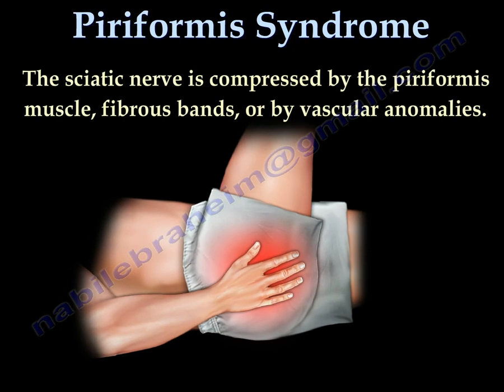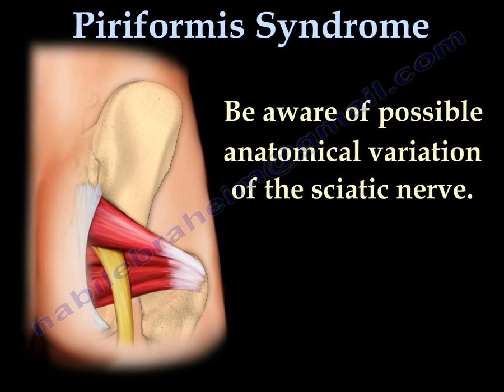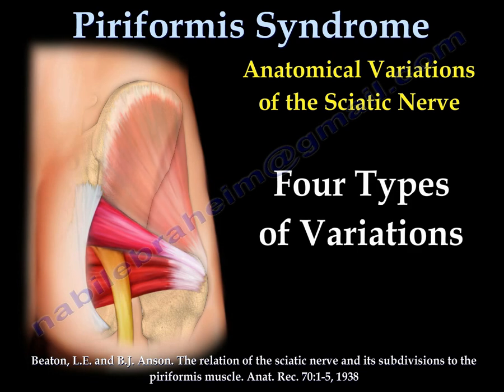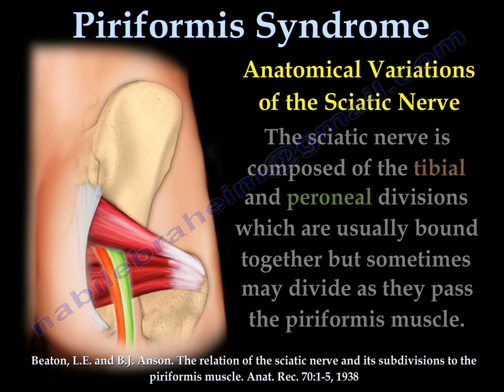The sciatic nerve is usually compressed by the piriformis, by some fibrous bands, or by vascular anomalies. Be aware of the possible anatomical variation of the sciatic nerve in relationship to the piriformis. There are four types of anatomical variations. The sciatic nerve has a tibial part and a peroneal part, which are usually bound together, but sometimes they divide as they pass through the piriformis muscle or underneath it.